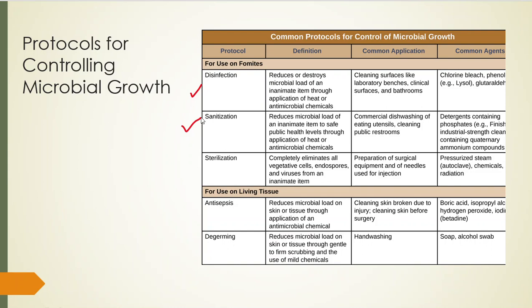Common protocols: some are used on living tissue, others on fomites — non-living surfaces. Disinfection reduces and destroys the amount of microbes using heat or chemicals — cleaning surfaces, bathrooms, using chlorine bleach, phenols, or glutaraldehyde. But there's no real standard as to what is considered disinfected; whether you make a significant inroads into their numbers is still questionable.